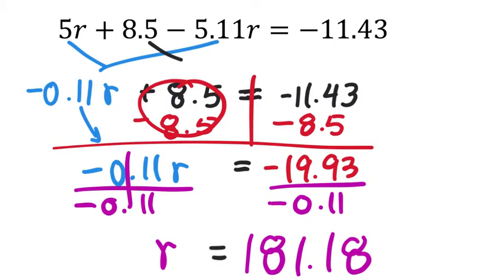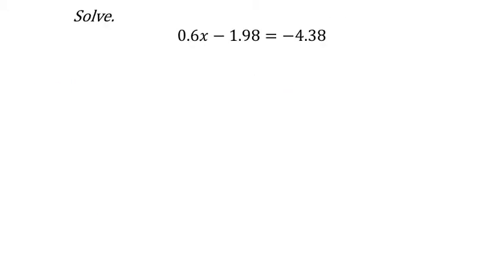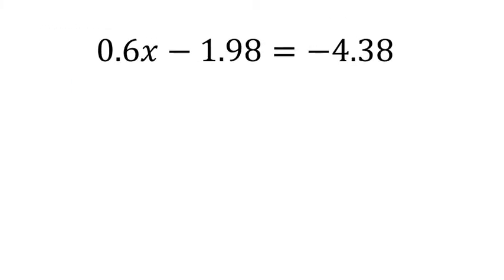When I put 181.18 in for r, I may get something slightly different from what we expect because it was rounded. On the calculator, I get negative 11.4298, which is pretty close to what we got. It's not exact because the decimal repeats, but that will do.